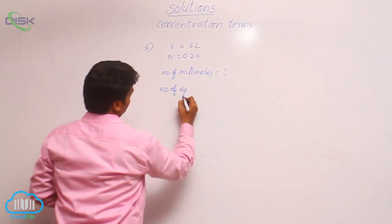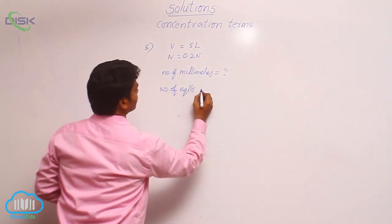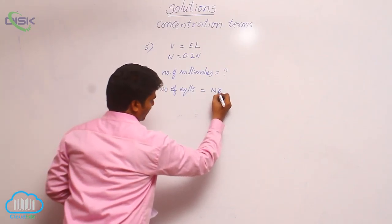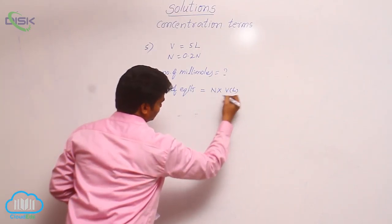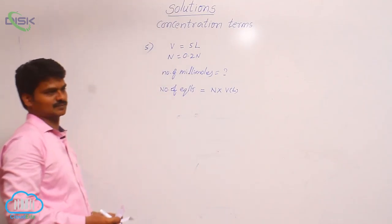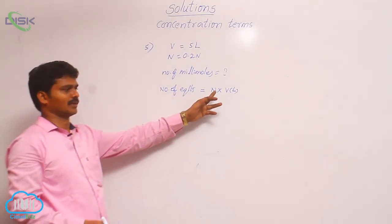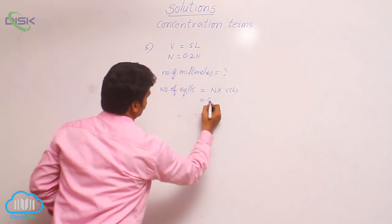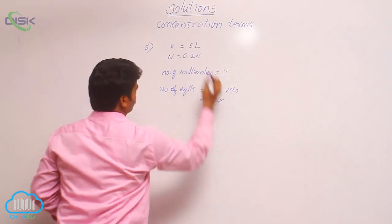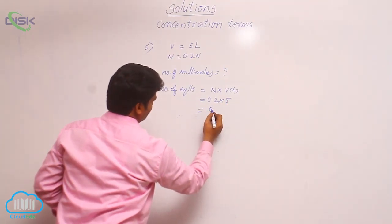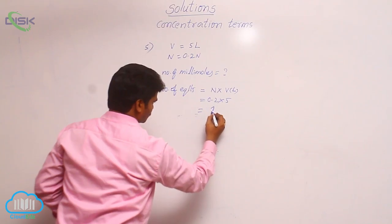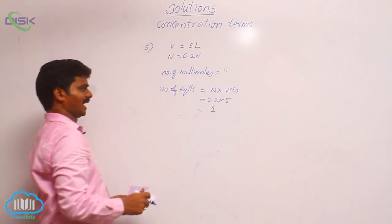Number of equivalence is equal to normality into volume in liters. This is the formula. Normality, how much? 0.2, volume 5. That means, what is the value? 0.2 into 5. That means 1. So, number of equivalence is 1.